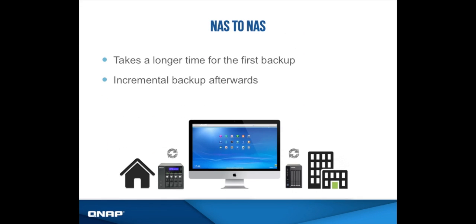The first method we're going to go over is NAS to NAS. To prevent anything from happening to the main NAS you use — let's say you have your main backups on NAS 1 at home — you will systematically backup your iMac via Time Machine onto the QNAP. Then this NAS would do a real-time backup or a scheduled backup to another NAS stored remotely, maybe at your parents' house or your friend's house. This prevents your files from any type of disaster, as the two QNAPs will have identical files stored on them. Note that the first time backing up will take longer, but after that it will be much faster.